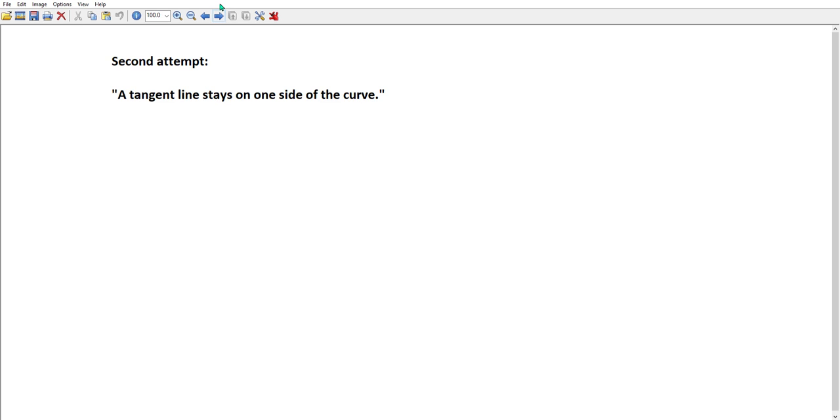A second effort might be a tangent line stays on one side of the curve, but that doesn't work very well either because we can see this blue curve right here. The red line is in fact a tangent line to this curve, but you can see that it in fact crosses the curve.